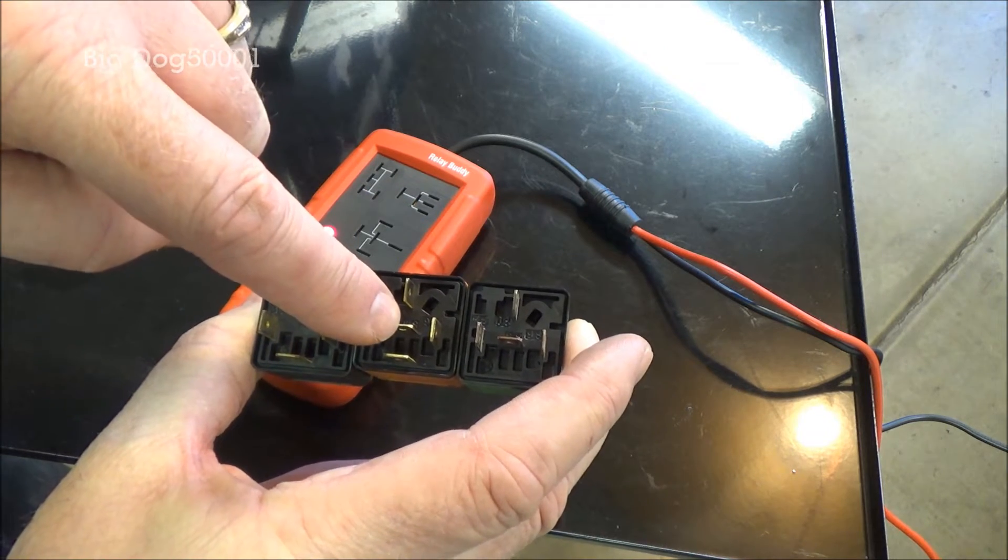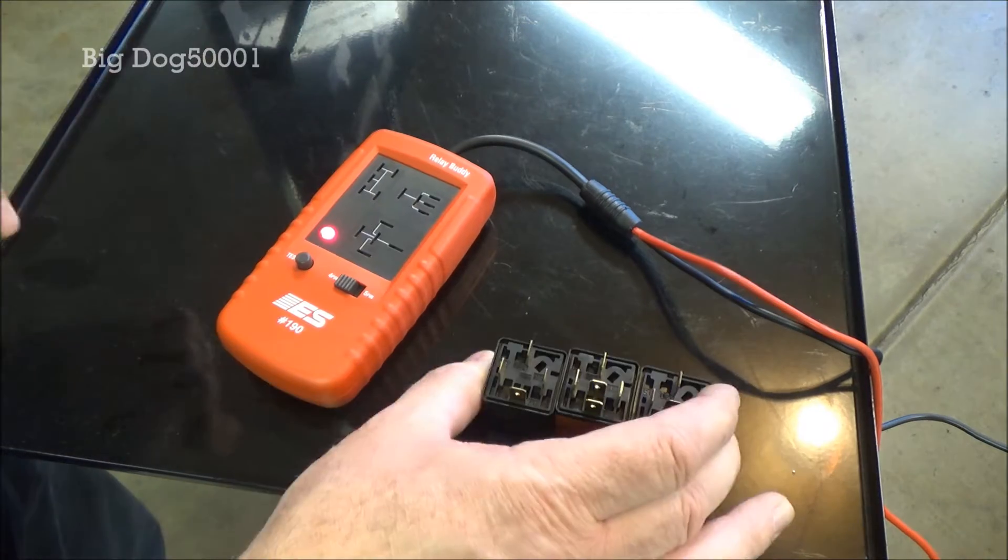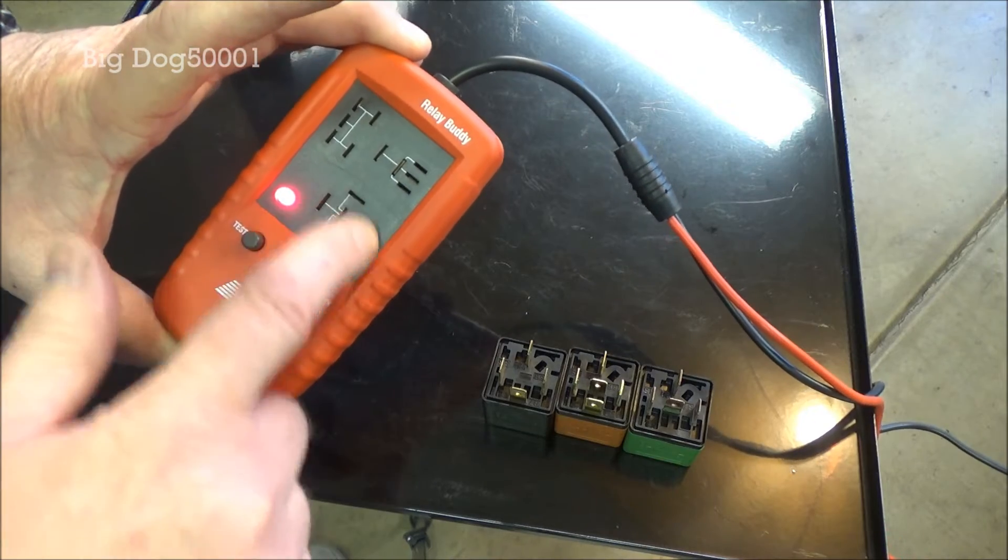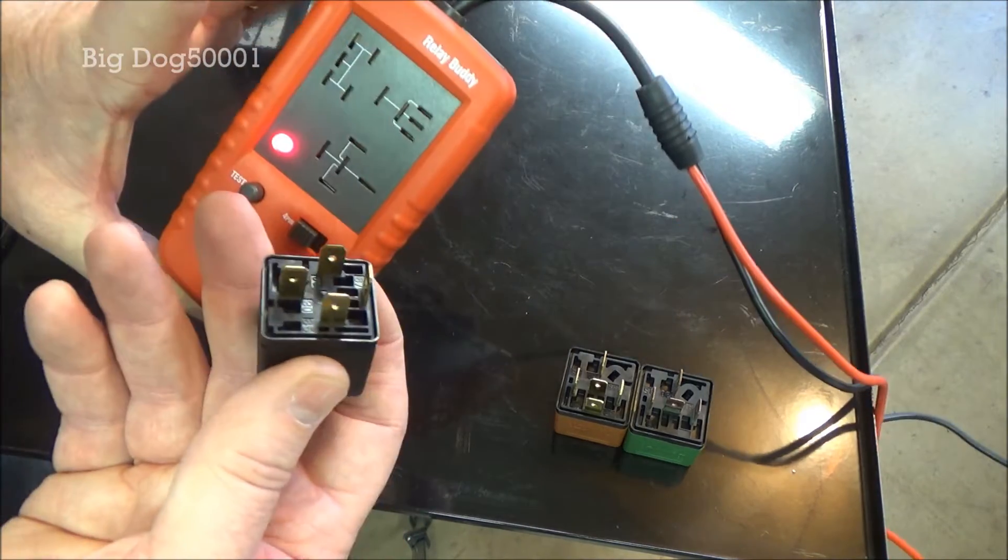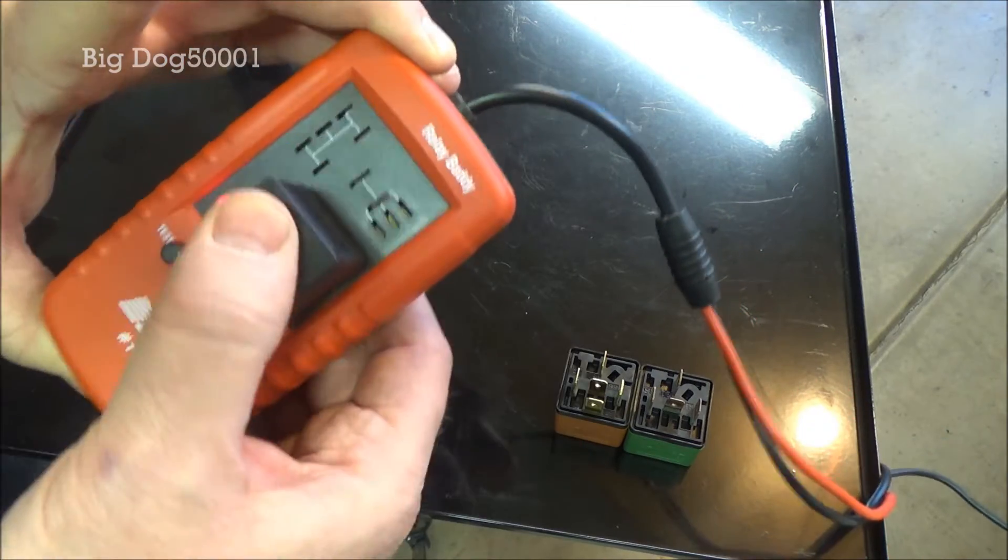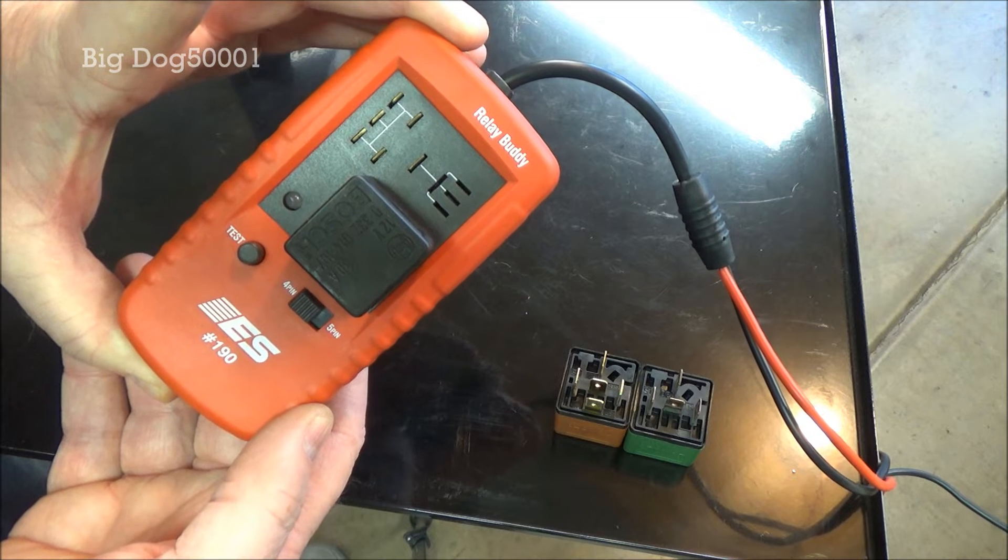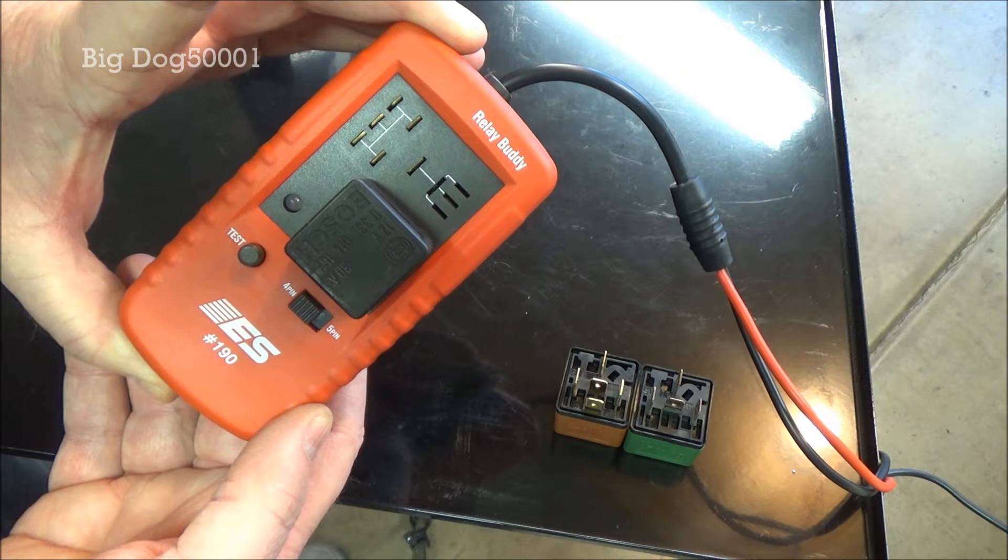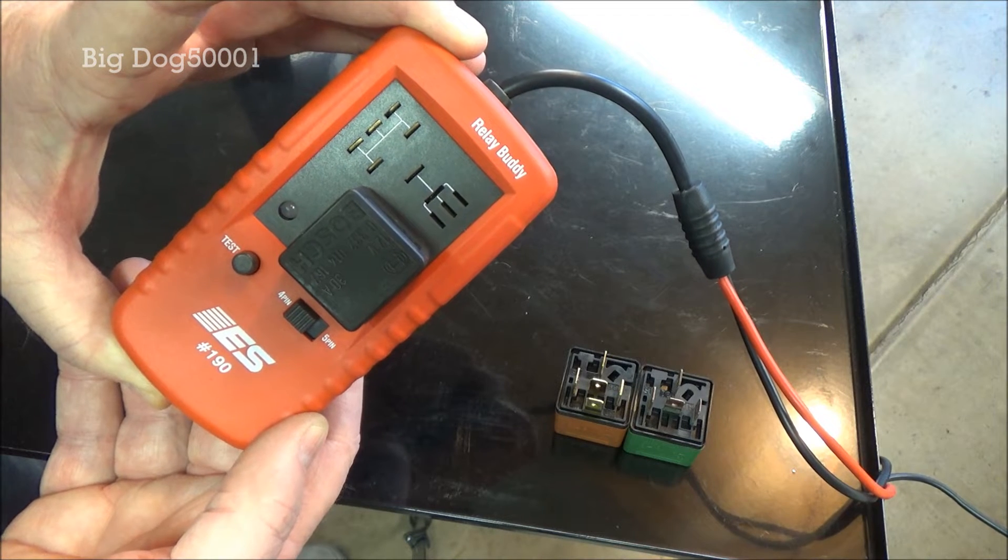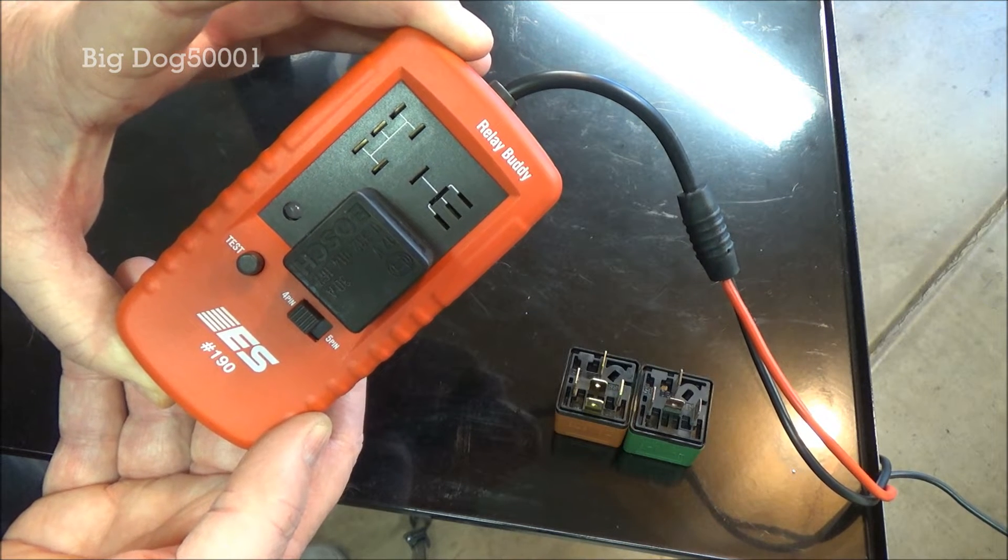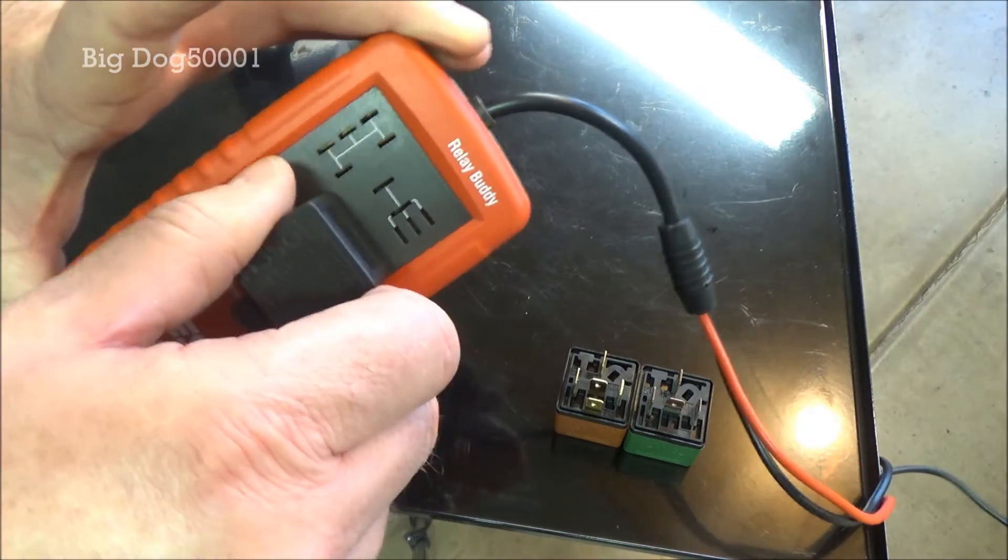And then this one has the five pin—the one in the middle. This one is a slight variation of that. So we're going to be using this socket right here for them. All we do is take it, plug it in the correct way, and hit test. That's it. Tested good. I hope you can hear it clicking—I can hear it clicking every time. We know that one's good.